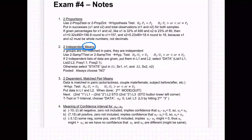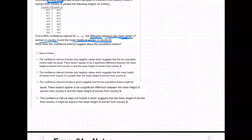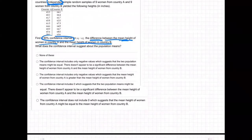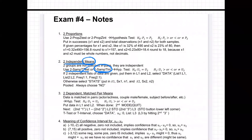So what do you do? You use a two-sample t-test or two-sample t-interval. In our case, two-sample t-interval because we're doing a confidence interval, not a hypothesis test. We're doing an interval.